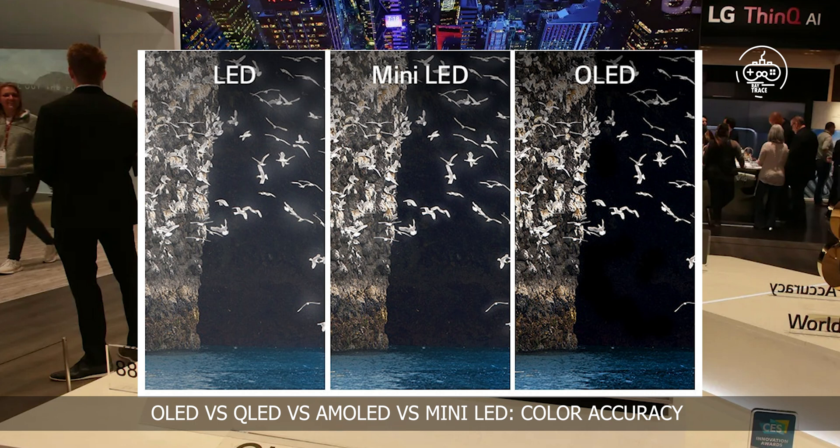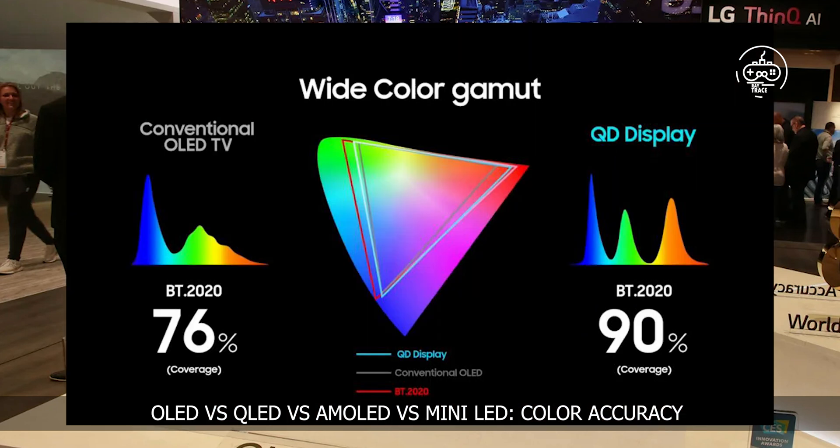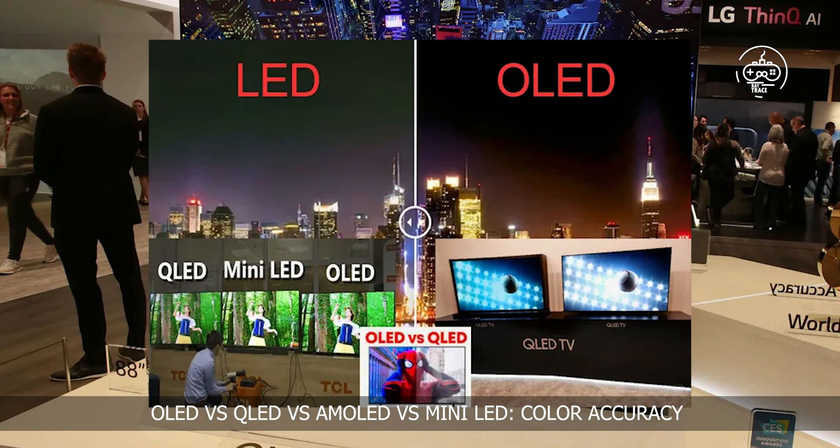As of right now, AMOLED is the king of color accuracy, but not by a large margin — OLED and Mini-LED follow right after it. Unless you're comparing screens side-by-side, you probably won't even notice a saturation difference between them all.